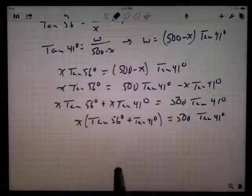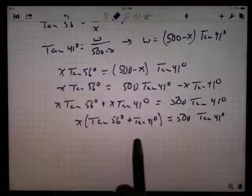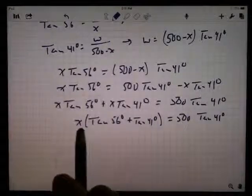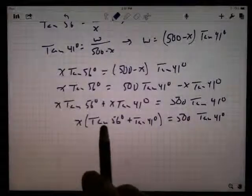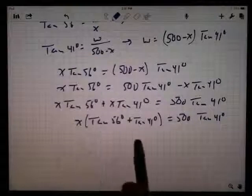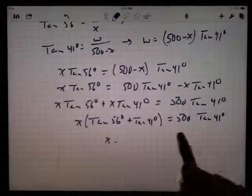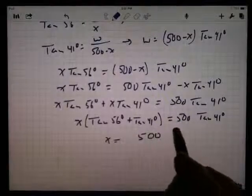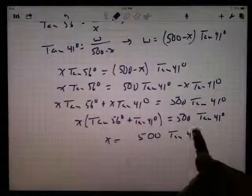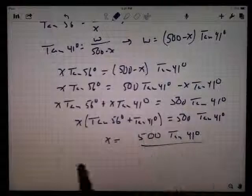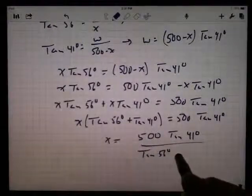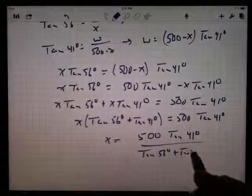We will, but for the moment we're going to stick here. But whatever this is, this is the number times X. I'm trying to solve for X. So that number is being multiplied by X. To get rid of it, I've got to divide. So X is this number over here. 500 tan 41 degrees divided by whatever this number is, tangent of 56 degrees plus the tangent of 41 degrees.